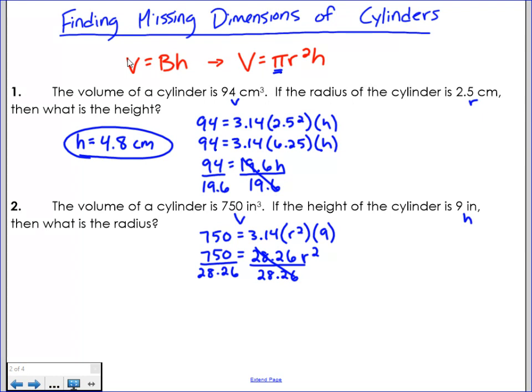750 divided by 28.26 is 26.5, and that gives me r squared. Now I'm not done here though. I stopped at this point for question number one because I had h, h was equal to 4.8 and I was done. But when I divide here, I'm left with r squared.